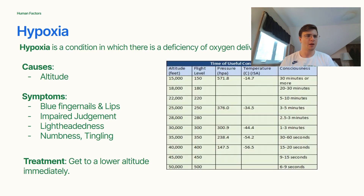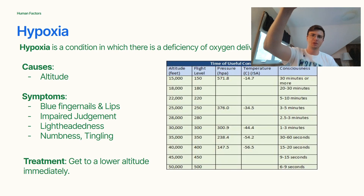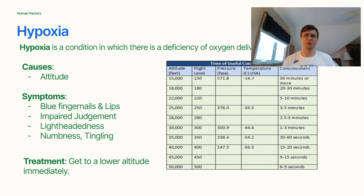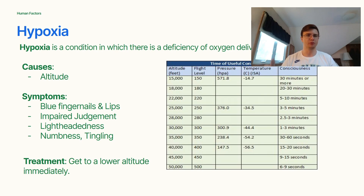Hypoxia is a condition in which there is a deficiency of oxygen delivered at the tissue level. The most common cause is altitude. Symptoms include blue fingernails and lips, impaired judgment, lightheadedness, tingling, and at the most severe level, passing out. Everyone's hypoxia symptoms are different. If you notice yourself or someone you're flying with acting strangely at 10,000, 12,000, or 15,000 feet, get to a lower altitude immediately.